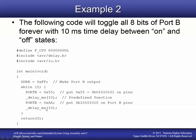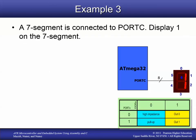The pins are just going back and forth between high voltage and low voltage every 10 milliseconds. The key takeaway is we use the data direction register to make pins outputs, and then the port register to assign high or low voltage.